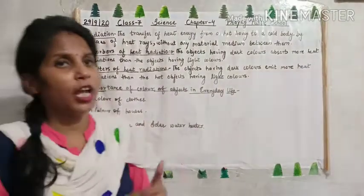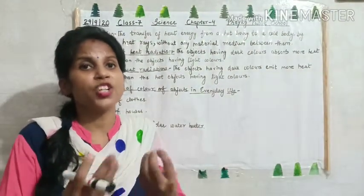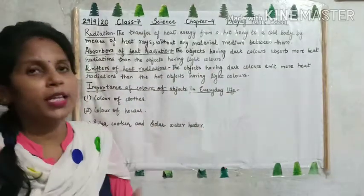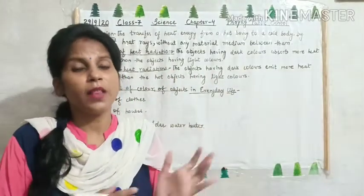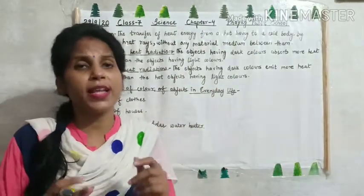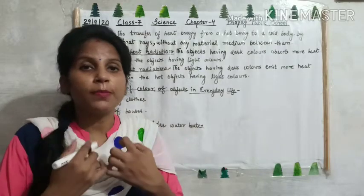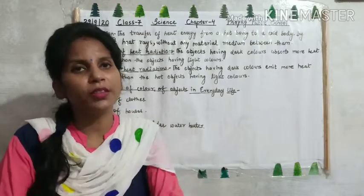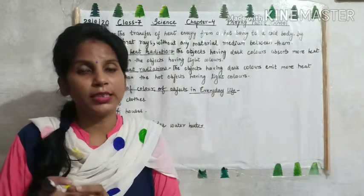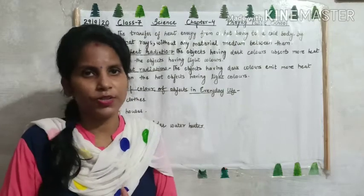Now, emitters of heat radiation. Emitters means what we give out. Which objects will give more heat? The objects having dark colors emit more heat than the objects having light colors. So objects with dark or black color, when they absorb heat, they will also give out more heat.